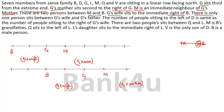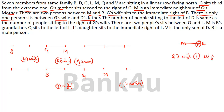The next clue: there is only one person sitting between G's wife and D's father. G's wife is placed. We cannot go one direction, so going the other direction, one seat gap gives us D's father's position. There are two possibilities here — D's father can be one seat to either applicable side of G's wife, giving two potential placements.